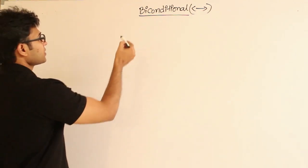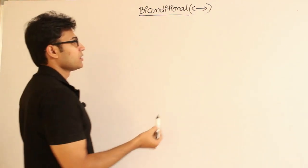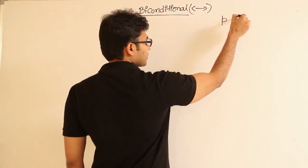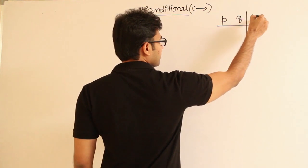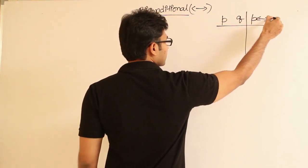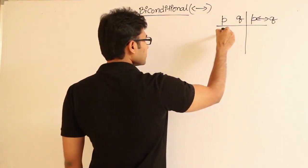And if you write something like this - if P is a statement, Q is a statement, if you say, so the truth table is going to be...